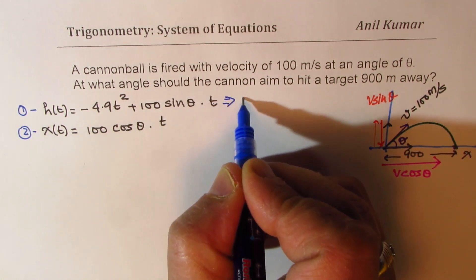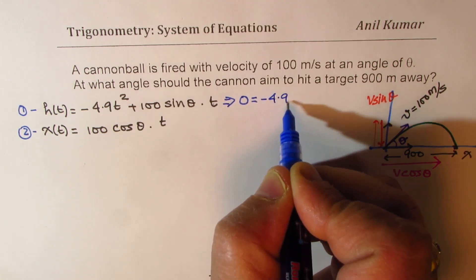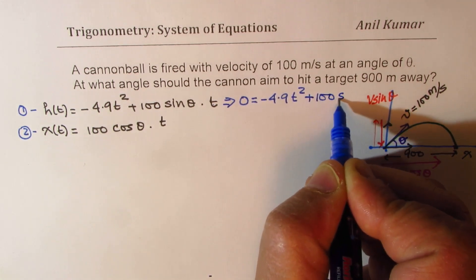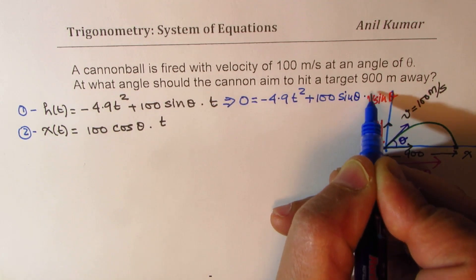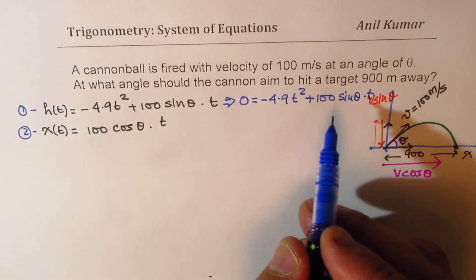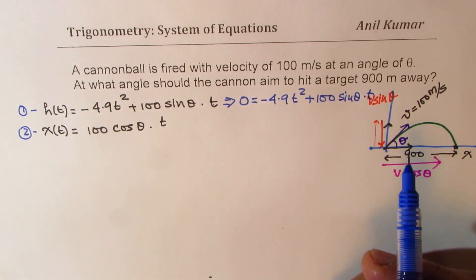So this implies that 0 should be equal to minus 4.9 t squared plus 100 sin theta times t. So that gives you a condition that 100 sin theta t should be equal to 4.9 t squared, right?